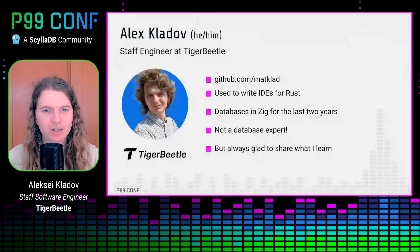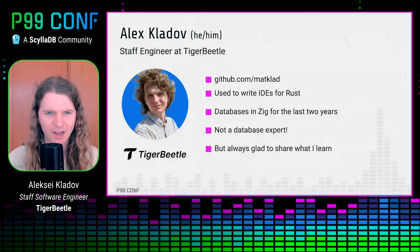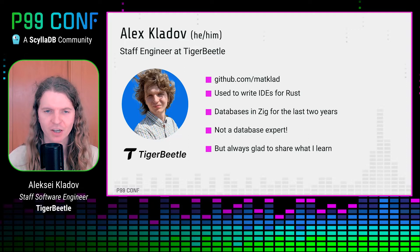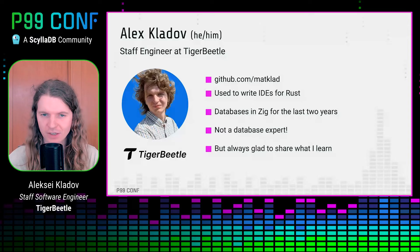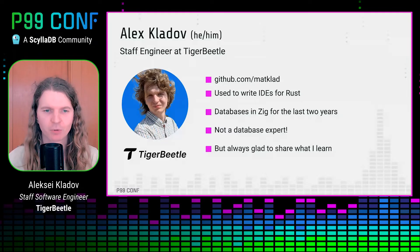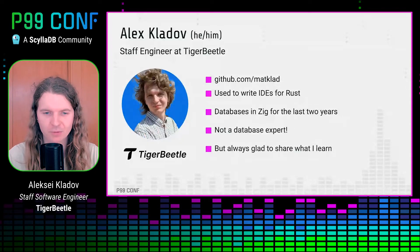Hi folks, thanks for joining today. Let's talk about just-in-time compaction in TigerBeetle. My name is Alex, also known as MatCloud on GitHub. For most of my career I was writing compilers and IDEs for Rust. It's only recently that I've switched to writing a database and in some other languages. So by no means am I a database expert yet. Nonetheless, I would like to share a couple of things I learned about this particular database with you.